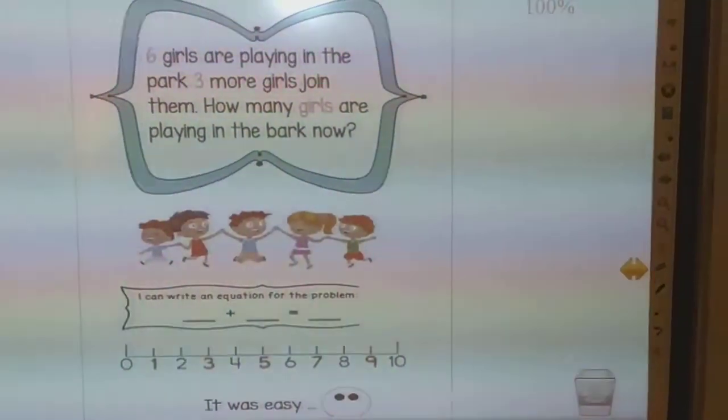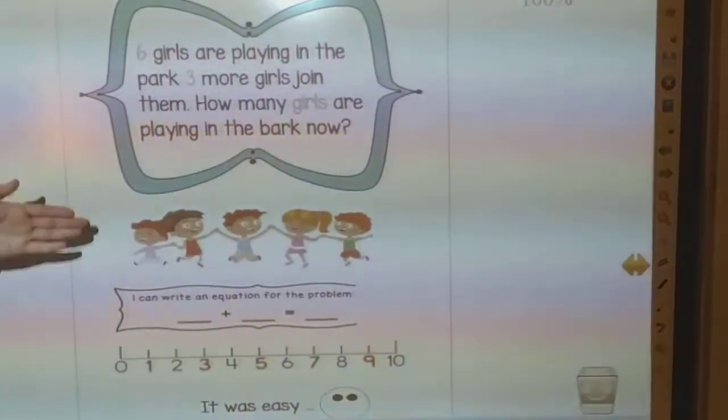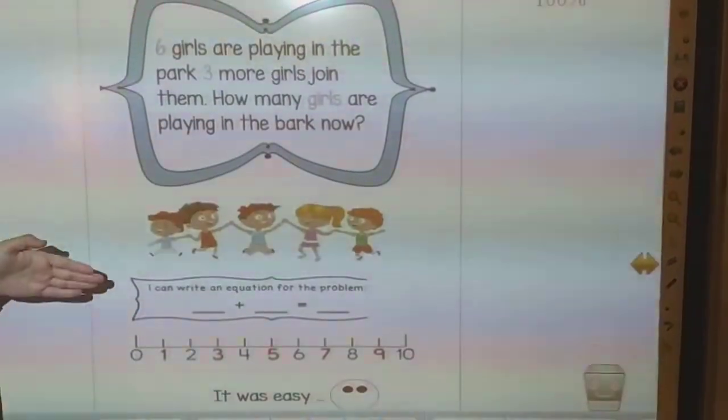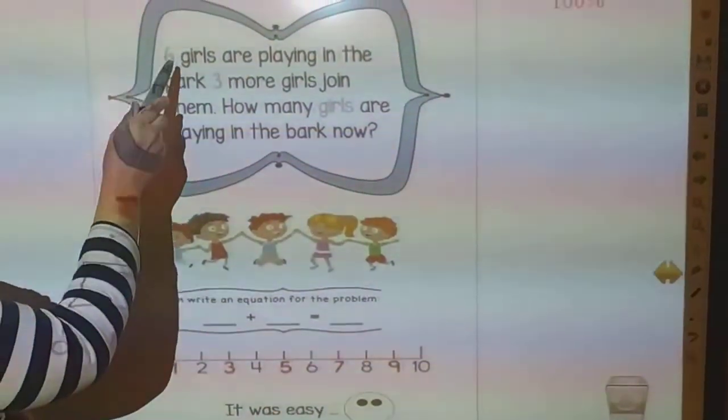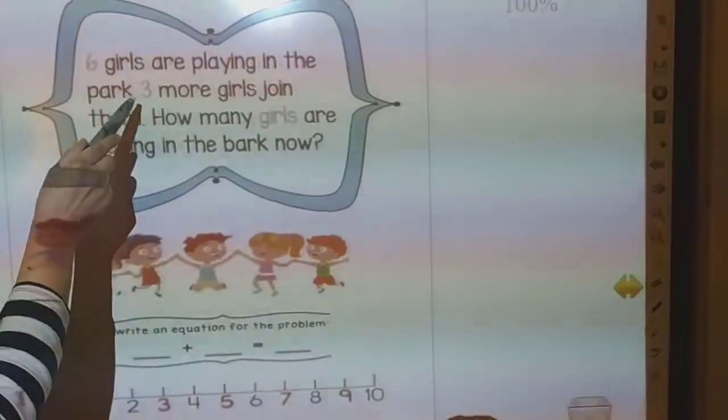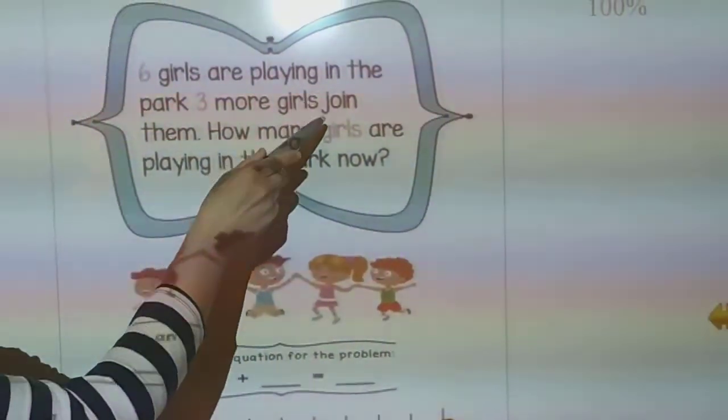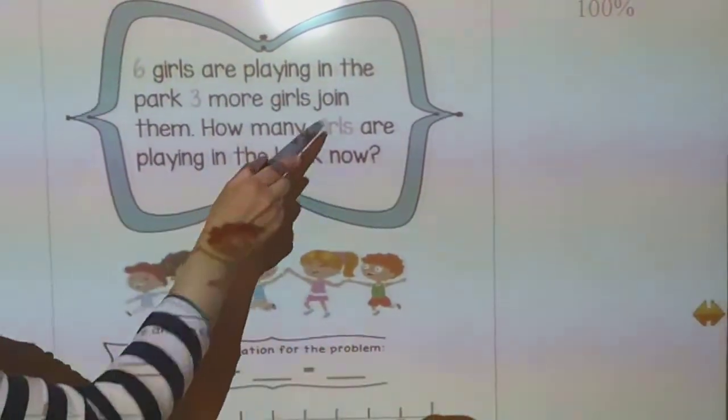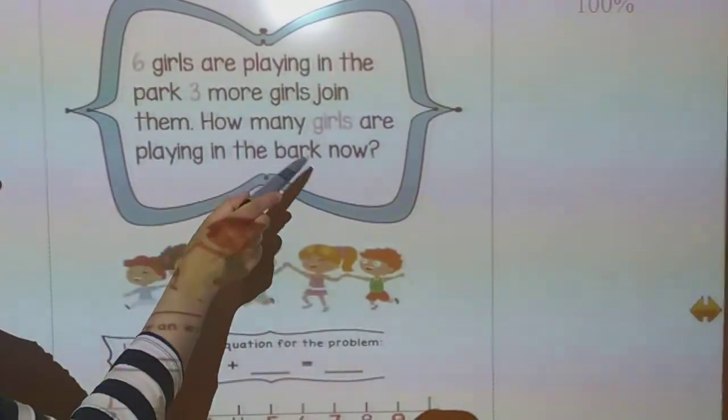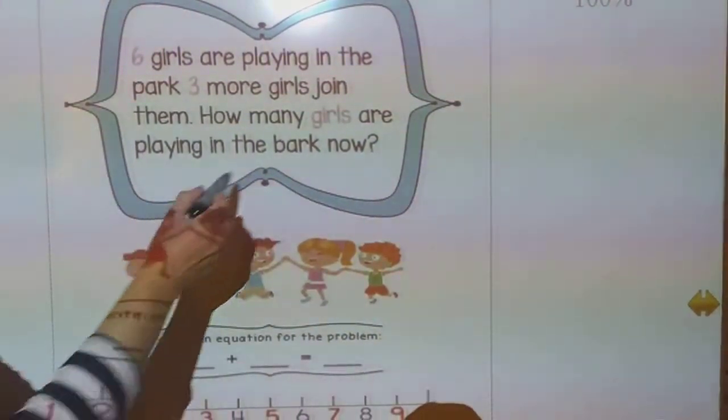This is a word problem and I want you to circle it and to answer it using the three steps. Six girls are playing in the park. Three more girls join them. How many girls are playing in the park now? So it's a park.